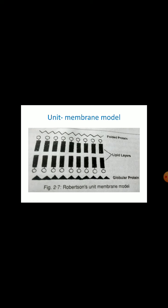In this diagram, it is clearly shown Robertson's unit membrane model. We can observe two types of proteins — the outer folded protein and the globular protein. The protein nature is different here, but the lipid layers are the same as usual. This is Robertson's unit membrane model.